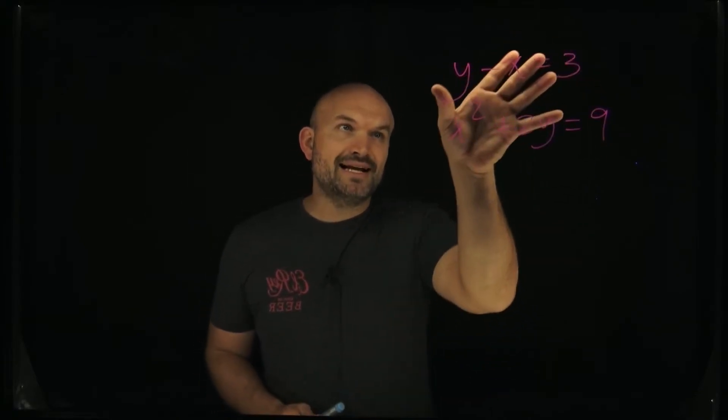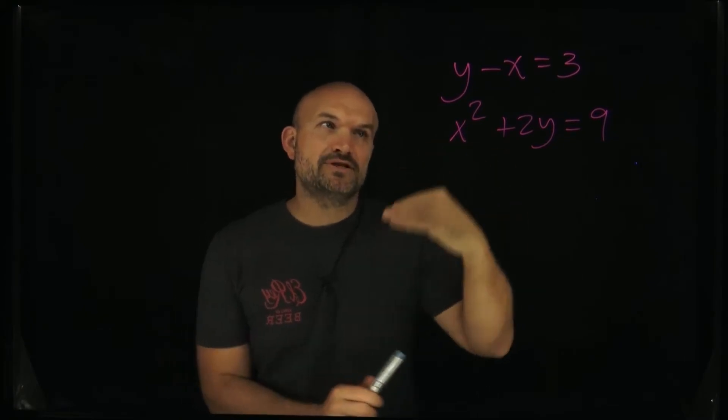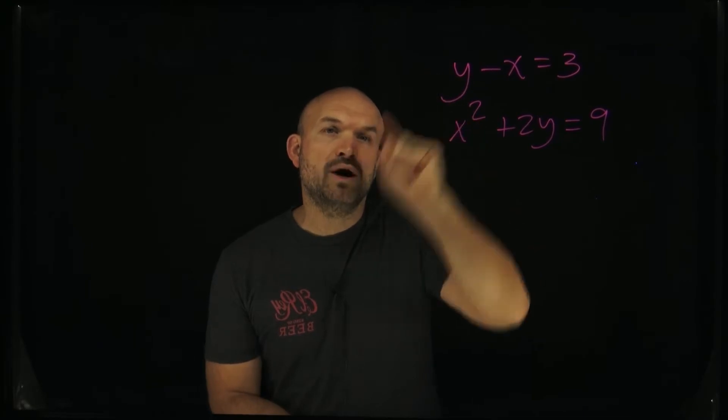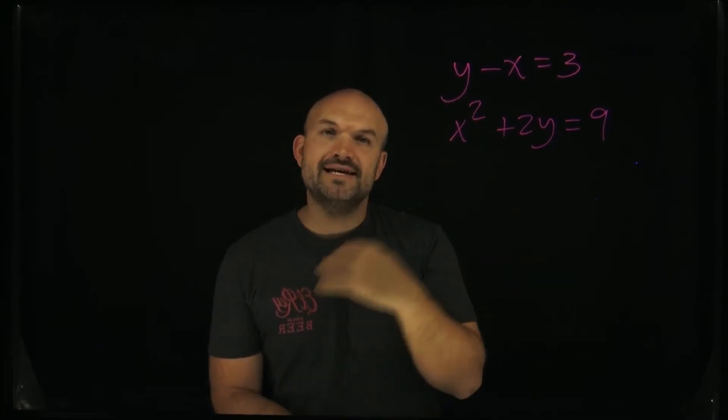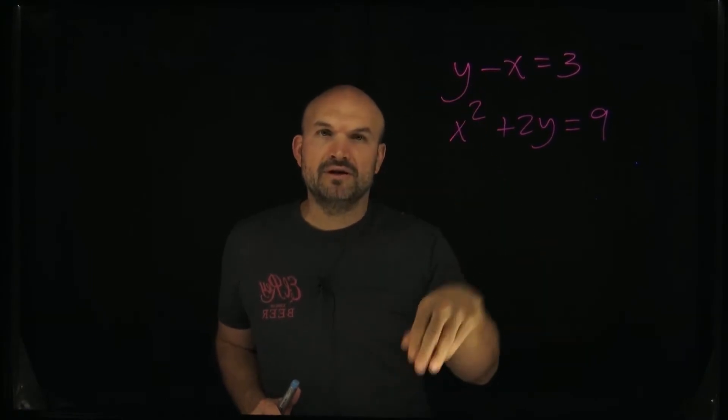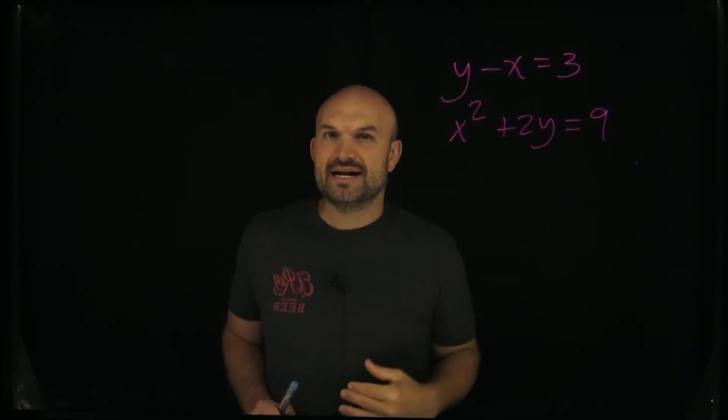So what I'm going to do is I recognize here, and again like the reason why substitution is usually going to be my preferred method here is again notice that I have a coefficient of one for my y, right? So whenever I see a coefficient of one for a variable, immediately that comes to my brain of like I want to solve for that variable, and then apply the substitution process.